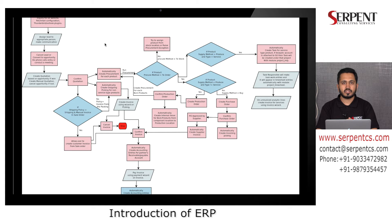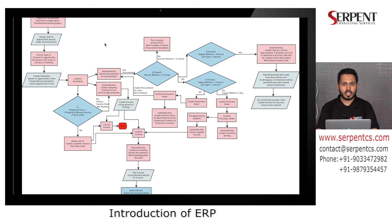How ERP is useful for a business, and when an organization should think about implementing ERP — for example, one company is using multiple software to manage different departments. To manage CRM they use applications like SugarCRM or Salesforce; for accounting they use other software; for document management they use software like Alfresco or K3; and to manage human resources they have their own customized HR software. So when an organization is growing big, they have to manage all these applications.